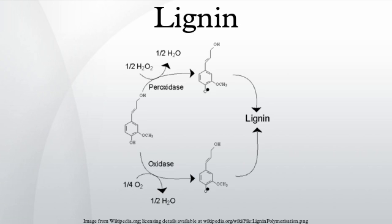It is particularly abundant in compression wood but scarce in tension wood, which are types of reaction wood. Lignin plays a crucial part in conducting water in plant stems. The polysaccharide components of plant cell walls are highly hydrophilic and thus permeable to water, whereas lignin is more hydrophobic. The cross-linking of polysaccharides by lignin is an obstacle for water absorption to the cell wall, making it possible for the plant's vascular tissue to conduct water efficiently.